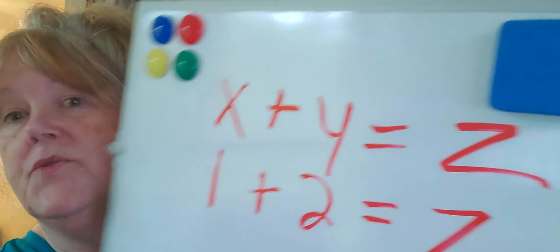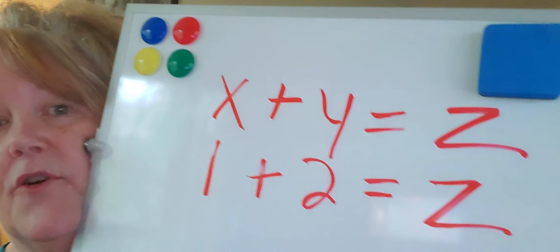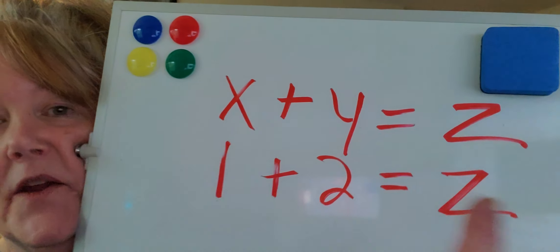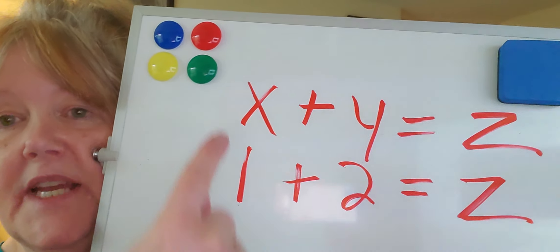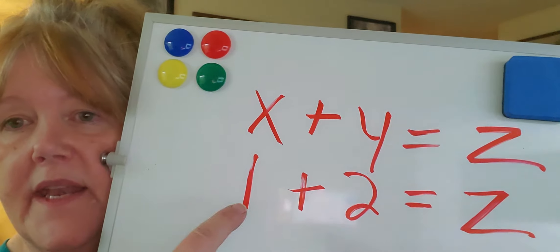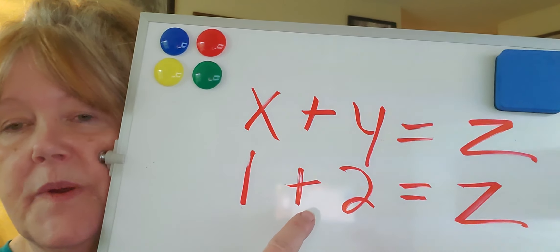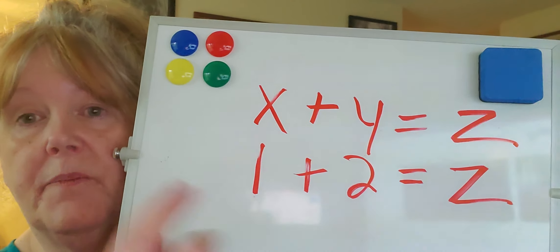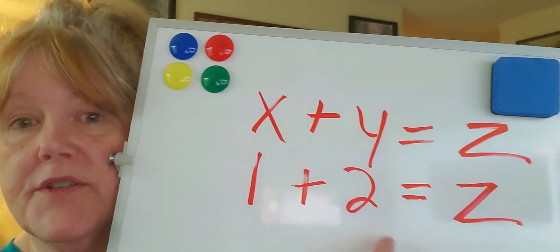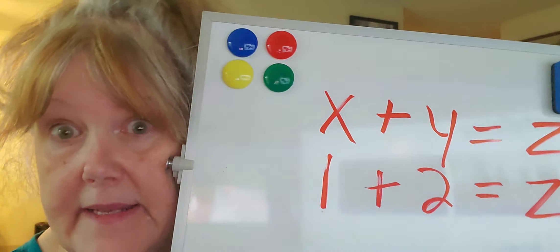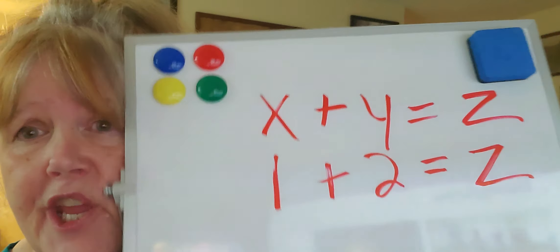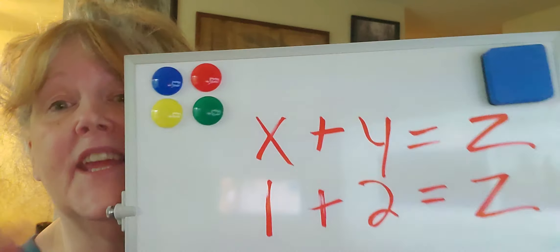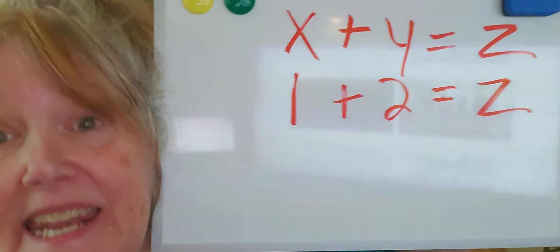So the original formula was X plus Y equals Z. So we're replacing X with a 1 and Y we're replacing with a 2. So it becomes 1 plus 2 equals Z or whatever the answer is. And if you don't know the answer to this now, I think you should go back to kindergarten.